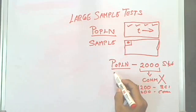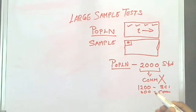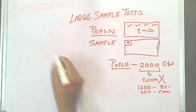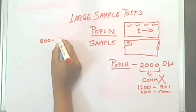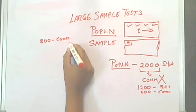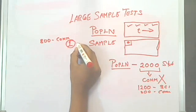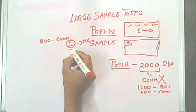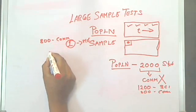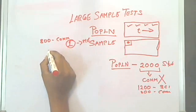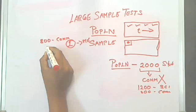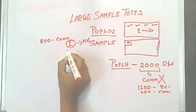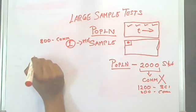Rather than asking everyone, I take a sample. I have 800 commerce students, but it's just me doing this research, so I can't ask all 800. I'll take a sample from them — excluding students who don't have statistics in their combination and narrowing down further.